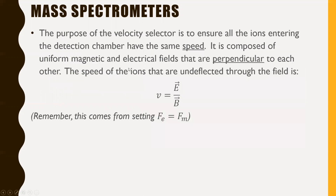The purpose of the velocity selector is to ensure all the ions entering the detecting chamber have the same speed. It is composed of uniform magnetic and electrical fields that are perpendicular to each other. The speed of the ions that pass through undeflected is given by V equals the electric field strength divided by the magnetic field strength. This comes from setting Fe equal to Fm and solving for velocity. Since you control both fields, you can control the velocity.